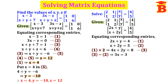Subtracting equation 3 minus equation 2: 4x minus x equals 3x, and the y terms cancel. Right side: 8 minus 5 equals 3. So 3x equal to 3, therefore x is equal to 3 divided by 3, that is 1.